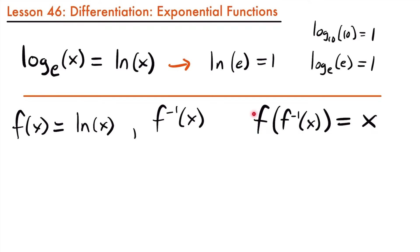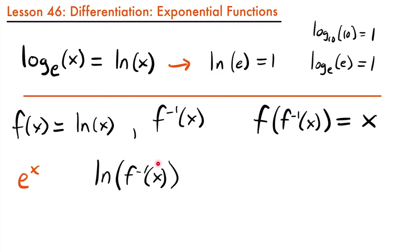For the inverse function of the natural log, let's consider e to the power of x. This would be an exponential function because our variable x is in the exponent. If we consider this function as the inverse of the natural log function, let's see if this statement holds true. The original function f(x) is the natural log of x, so we will have the natural log of e to the power of x.